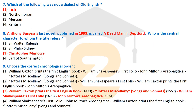Question seven: which of the following was not a dialect of Old English? The correct answer is Irish — Irish was not an Old English dialect. All others — Northumbrian, Mercian, and Kentish — are Old English dialects. These are the exact types of questions asked in the UGC NET English Literature July 2018 paper.